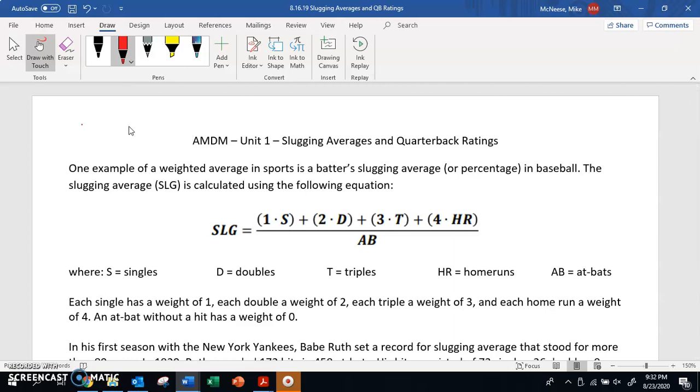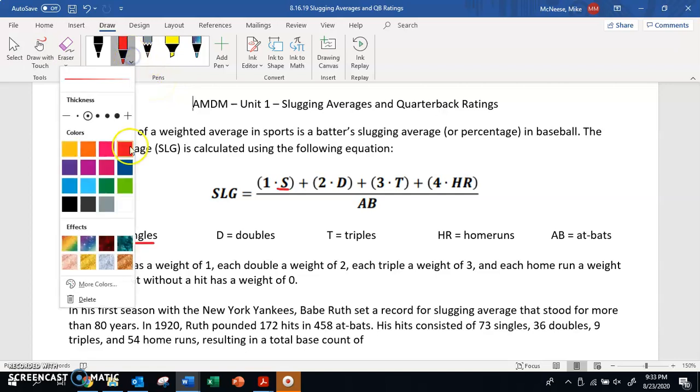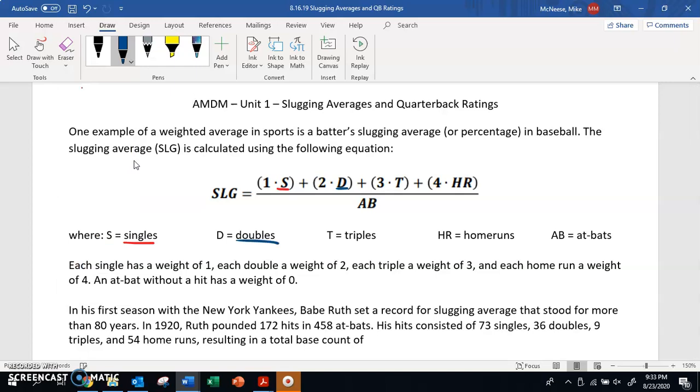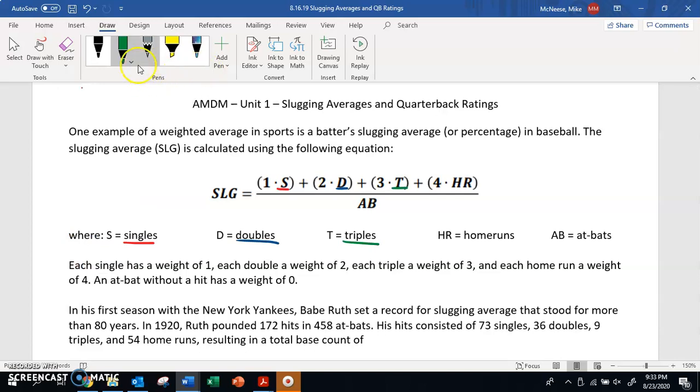One example of a weighted average in sports is a batter's slugging average or percentage in baseball. The slugging average (SLG) is calculated using the following equation. We've got S representing singles, D representing doubles, T representing triples, HR representing home runs, and AB representing at-bats.